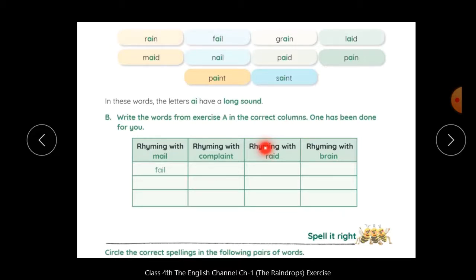Now, rhyming word with raid. Made. Okay. You will write here made. Then laid, paid. These are the rhyming words. Same like brain, rain. You will write here rain. Then grain. You will write here grain.